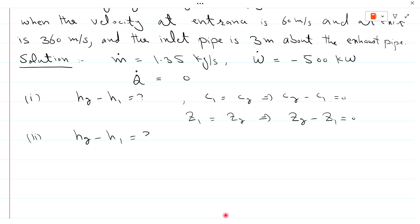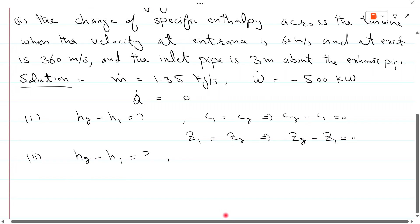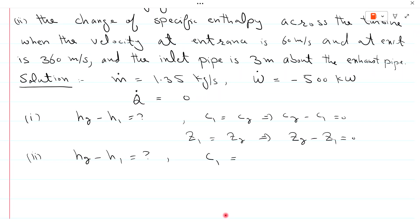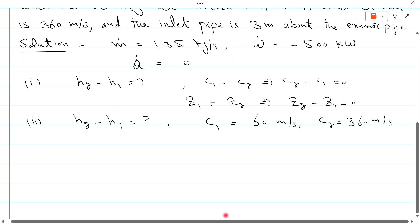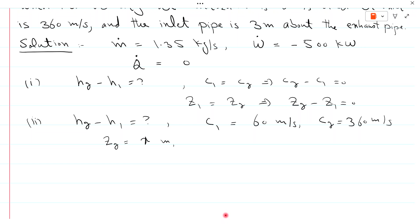Part 2: Find h2 minus h1 when the velocity at entrance C1 equals 60 m/s and at exit C2 equals 360 m/s, and the inlet pipe is 3 m above the exhaust pipe. Since inlet is above exit, if Z2 equals X meters then Z1 equals X plus 3 meters, so Z2 minus Z1 equals minus 3 meters.